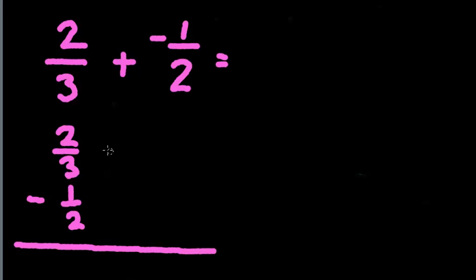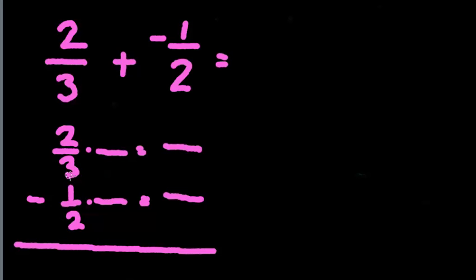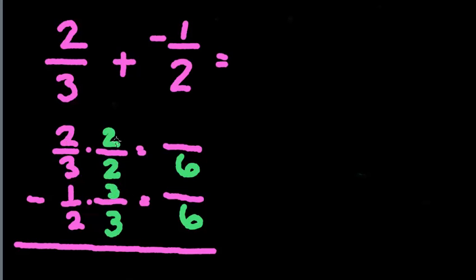Since they're fractions, I have to change them to have common denominators. I like to set them up vertically and change their denominators. What does my common denominator need to be? Since 2 and 3 don't have anything in common, I can just multiply them. 2 times 3 is 6, so my new denominator is going to be 6. 3 times what gets me to 6? That's 2, so I multiply top and bottom by 2. 2 times what gets me to 6? That's 3, so I multiply top and bottom by 3. This becomes 2 times 2 is 4, and 1 times 3 is 3. So I subtract 4 sixths minus 3 sixths, which is 1 sixth.